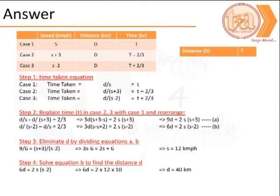In case 2, it is t-2/3 = d/(s+3). In case 3, it is t+2/3 = d/(s-2).